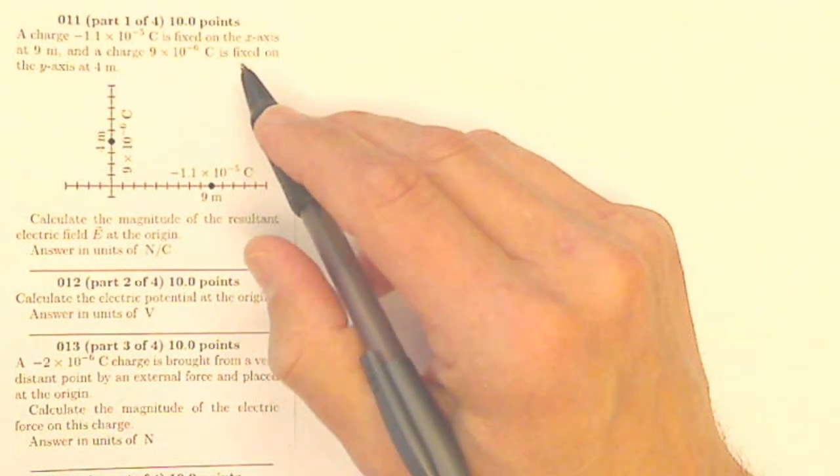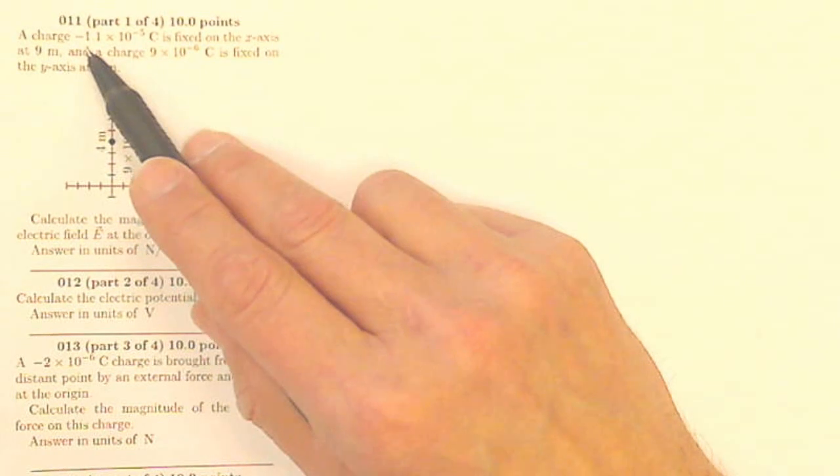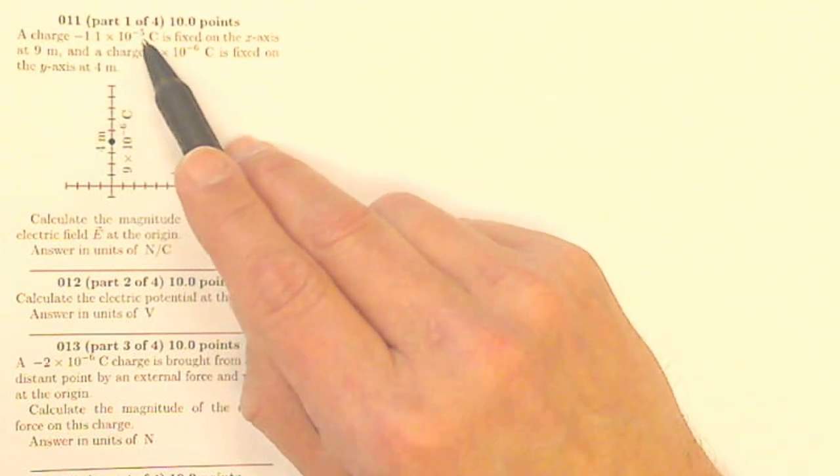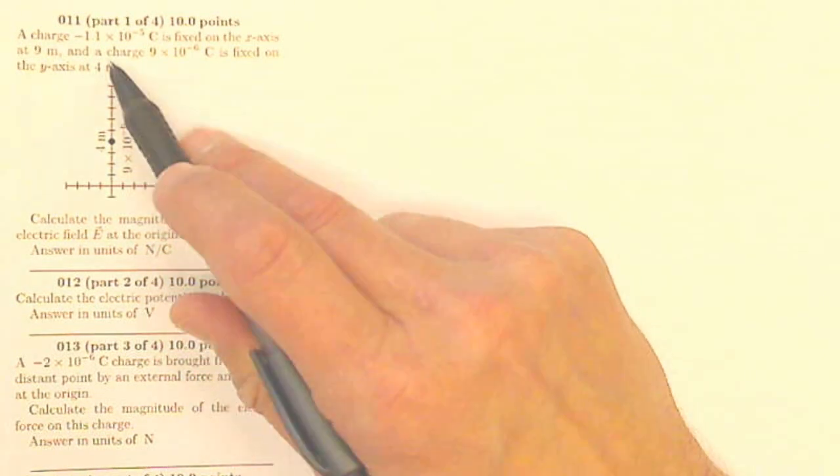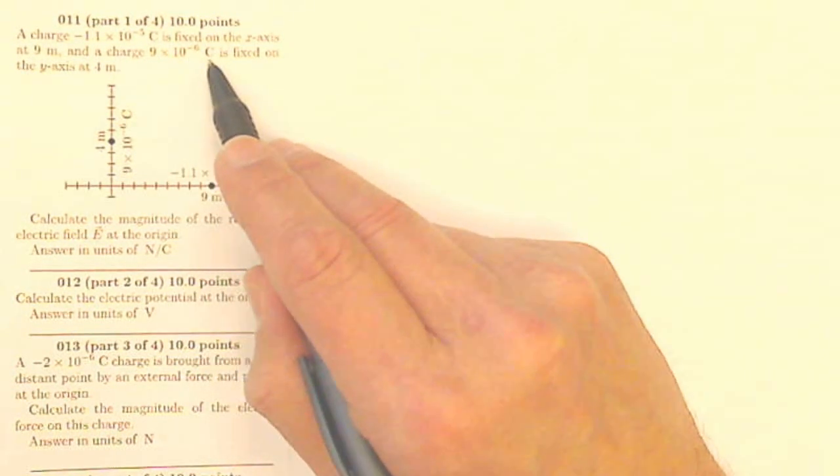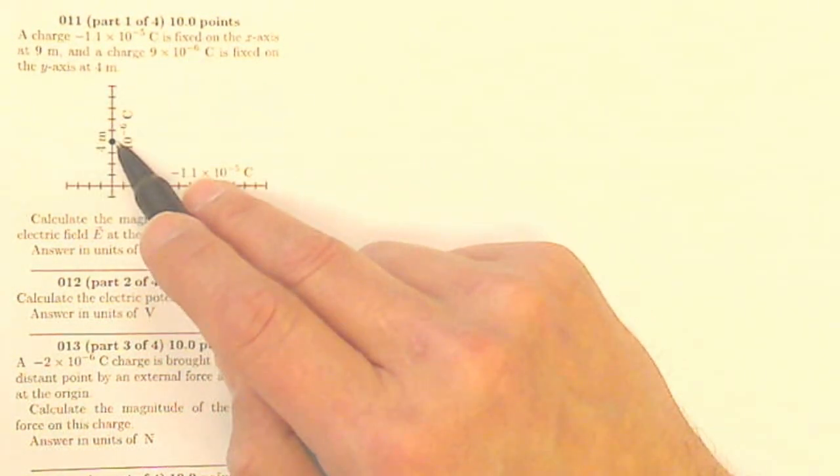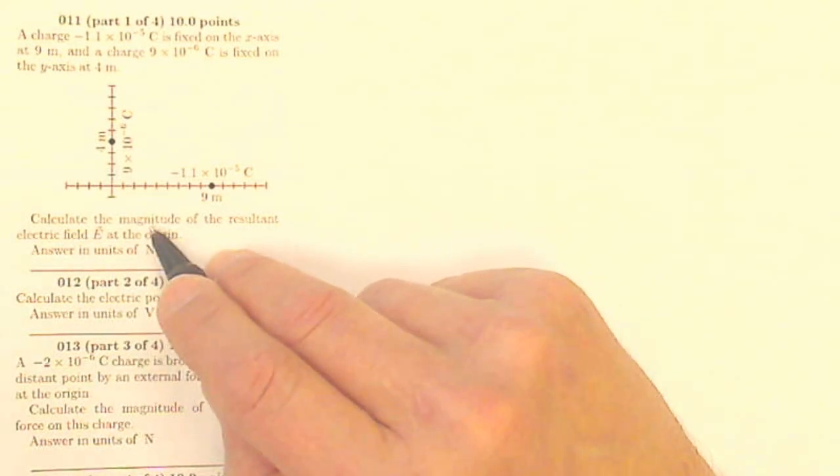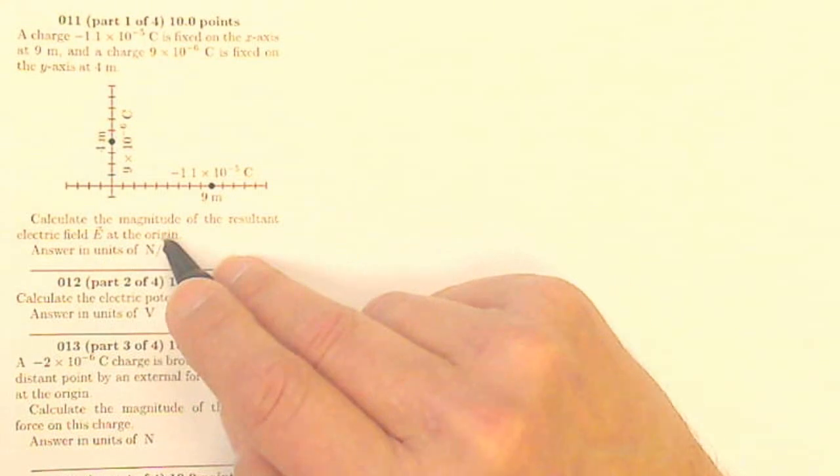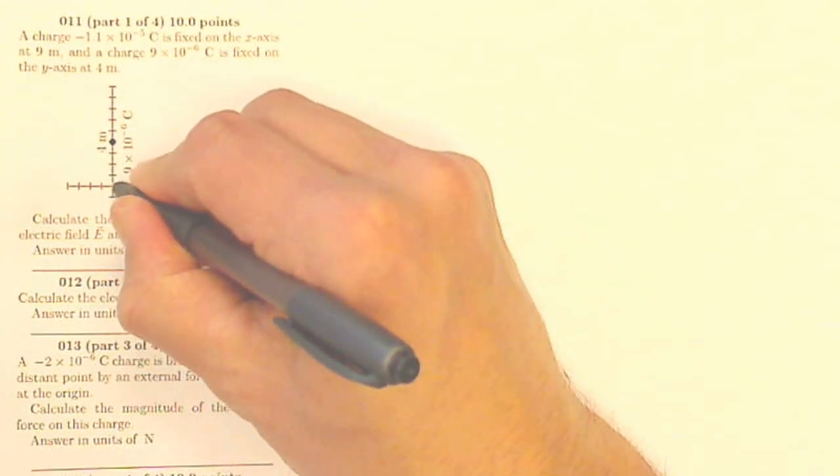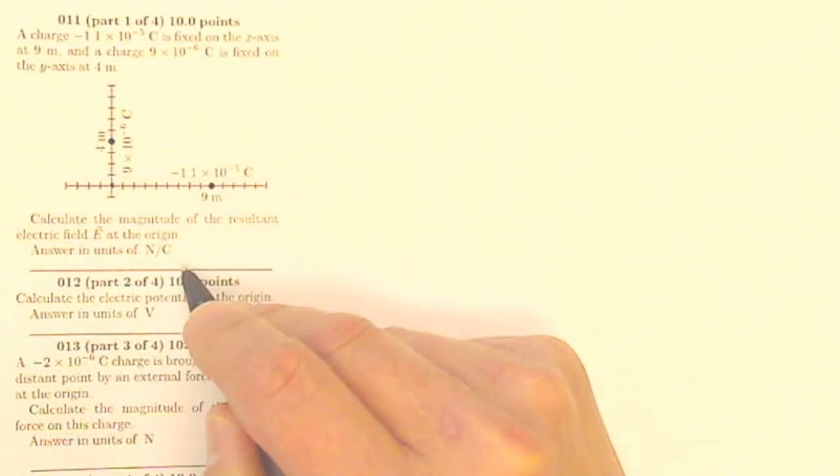Question 11, just like in the previous homework, asks: A charge of negative 1.1 times 10 to the negative 5th coulombs is fixed on the x-axis at 9 meters, and a charge of 9 times 10 to the minus 6th coulombs is fixed on the y-axis at 4 meters. Calculate the magnitude of the resultant electric field E at the origin. So I want to know my electric field at this point, answering in units of newtons per coulomb.